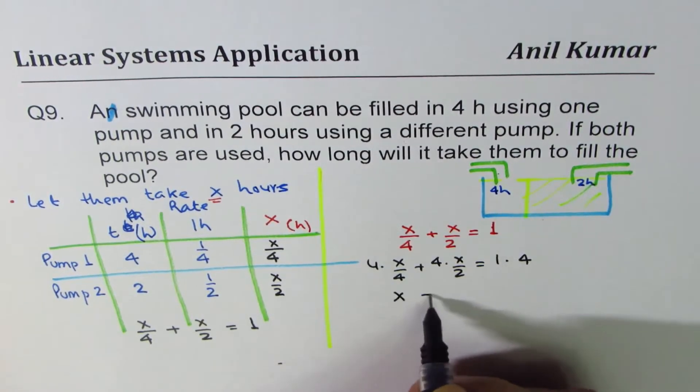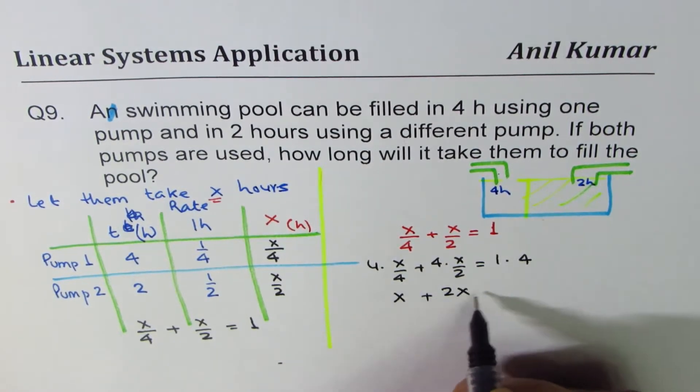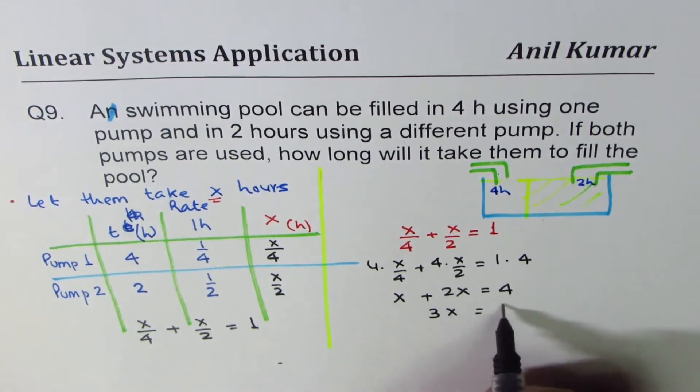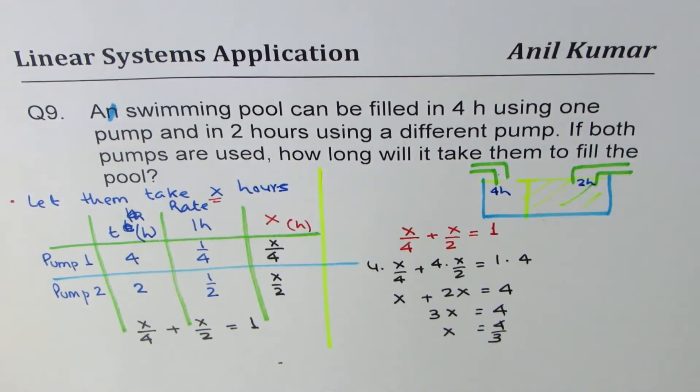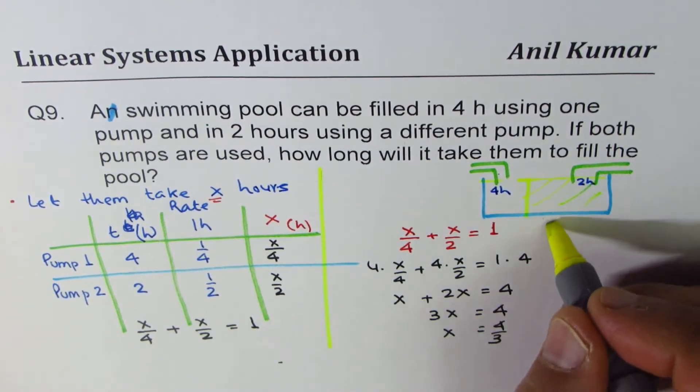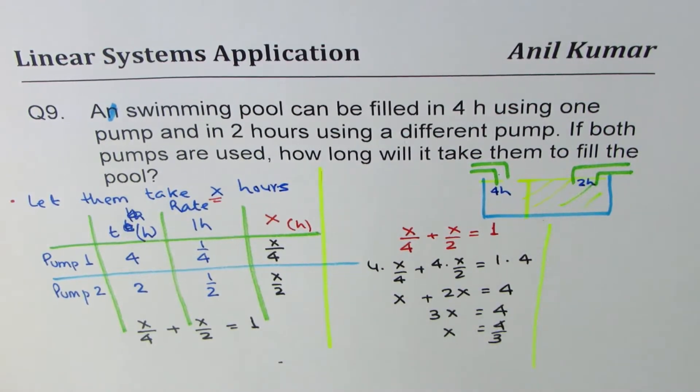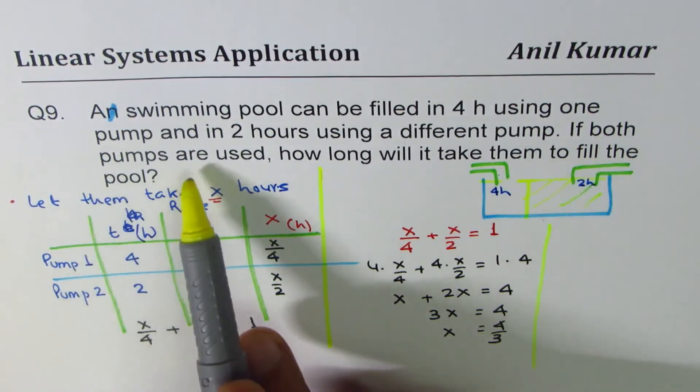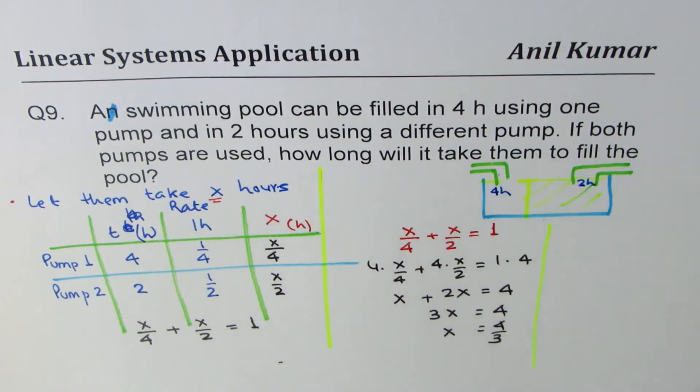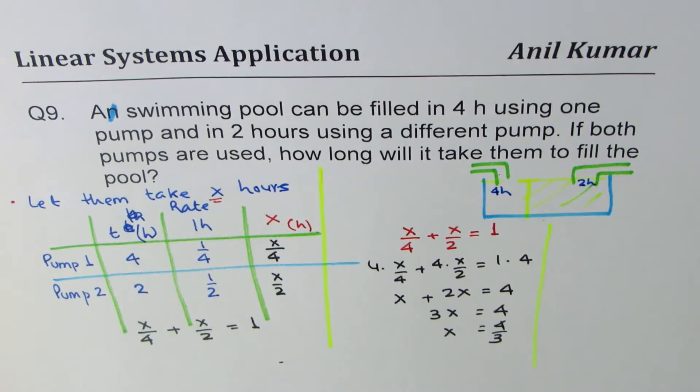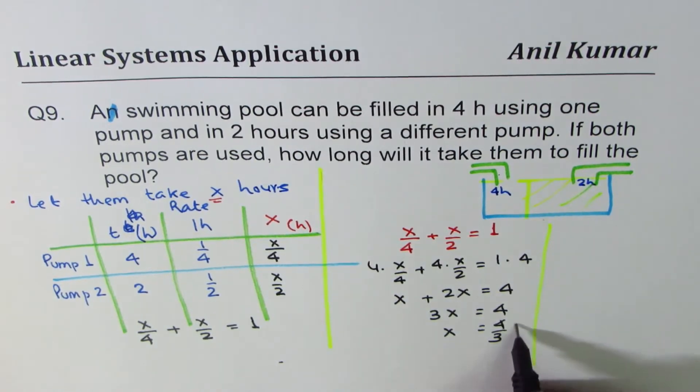So that gives you X plus two X equals to four or X is equals to, let's say three X equals to four or X equals to four over three hours. So that is the total time taken by both the pools and both the pumps working together. The question is, if both pumps are used, how long will it take them to fill?